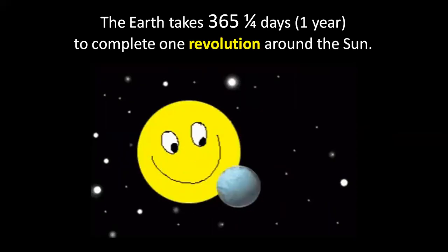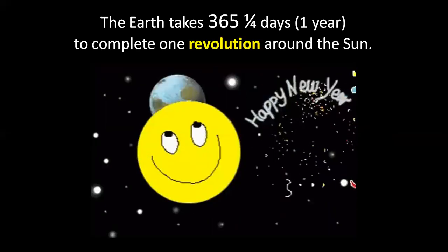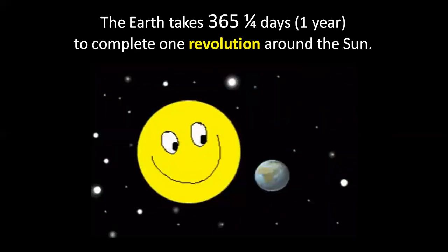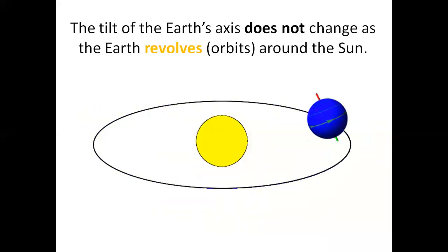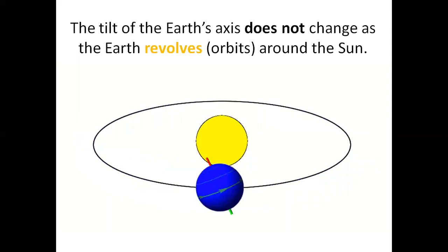The Earth takes 365 and a quarter days, one year, to complete one revolution around the Sun. The tilt of the Earth's axis does not change as the Earth revolves orbits around the Sun.